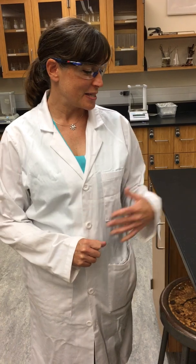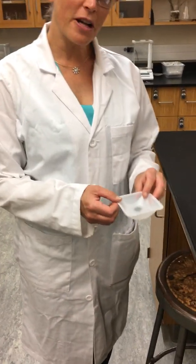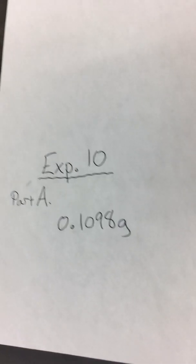Welcome to experiment 10. In this experiment, it is broken down into part A, part B, and part C. So we're going to start with part A, which is we're going to take a Kool-Aid mixture. We've already weighed this out, and it's 0.1098 grams of my Kool-Aid mixture.